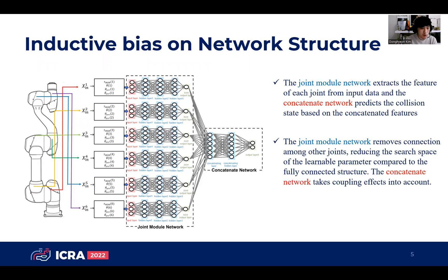The inductive bias for network structure is as follows. The network is composed of a joint module network and a concatenate network. The joint module network extracts the feature of each joint from input data, and the concatenate network predicts collision state based on the concatenated features. The joint module network removes connections among other joints, reducing the search space compared to the fully-connected structure. The concatenate network takes complete effects into account.